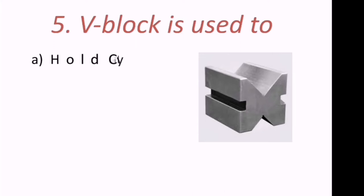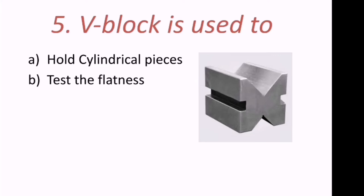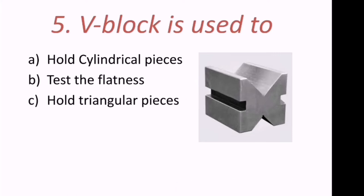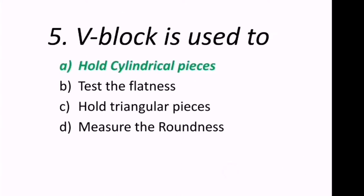Fifth question: A V-block is used for what? The options are to hold cylindrical pieces, test the flatness, hold triangular pieces, or measure the roundness. The V-block is used to hold cylindrical pieces — A is the correct answer.